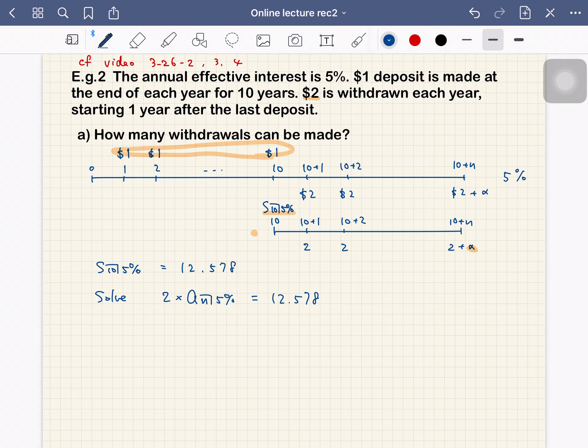By BA2 Plus calculator you can calculate n from this. To be exact, you can put the negative 12.578 as present value and 2 as payment, and 5 as interest rate, and compute.